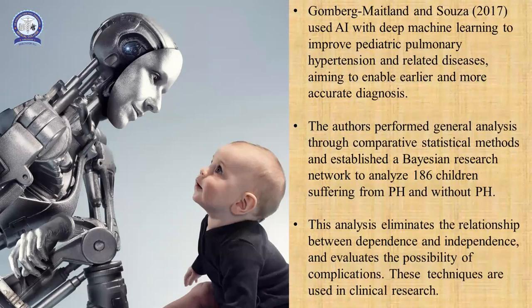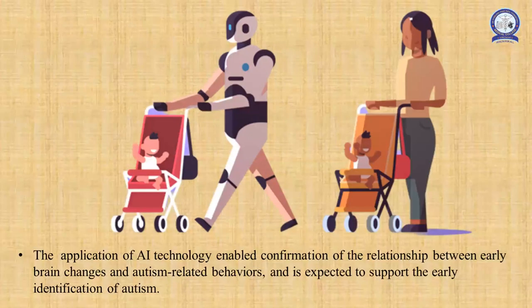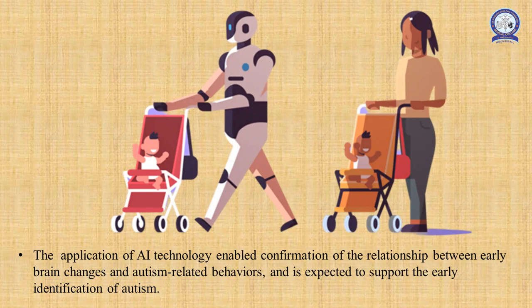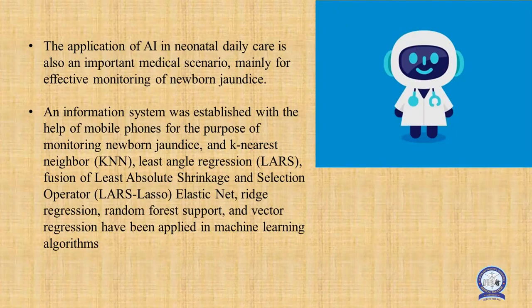Gomburg, Metland and Suza in 2017 used artificial intelligence with deep machine learning to improve the understanding of pediatric pulmonary hypertension and its related diseases. The main aim was to enable earlier and more accurate diagnosis of pulmonary hypertension. They performed general analysis through comparative statistical methods and established a research network to analyze 186 children suffering from pulmonary hypertension and without pulmonary hypertension. The application of artificial intelligence technology has also enabled confirmation of the relationship between brain changes, child behavior, and early diagnosis and treatment of diseases.